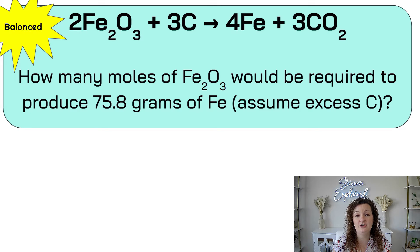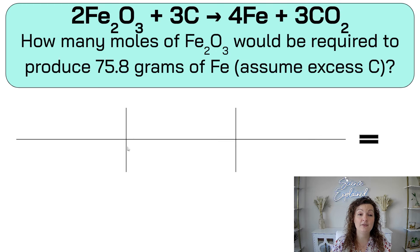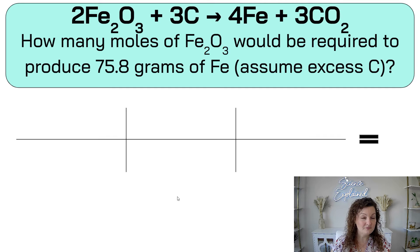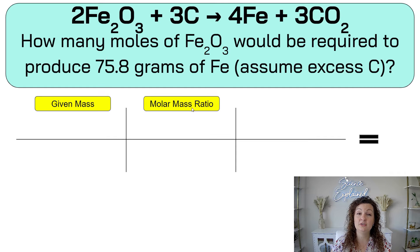How many moles of Fe₂O₃ would be required to produce 75.8 grams of Fe, assuming there's an excess of carbon? You always want to set up your bridge by looking at that roadmap. We know that we're going to have two T's in our bridge, which means this is a two-step problem. Start with what you're given — you are given 75.8 grams. That is our given mass. Now in order to see what comes next, we look at that roadmap. The next thing is changing it to moles, so we're going to need our molar mass ratio.